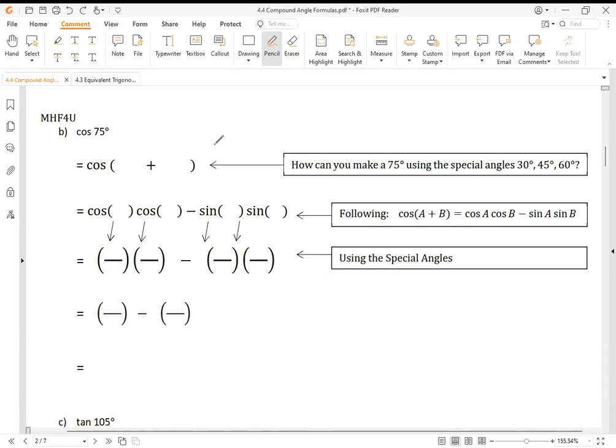All right. Cosine 75. What combination of angles gives me 75? 30 and 45 in whatever order you wish. I have a compound angle - that should ring a bell. Knowing that this is cosine, the formula is not sine, cos, cosine. The formula is cos, cos, sine, sine.